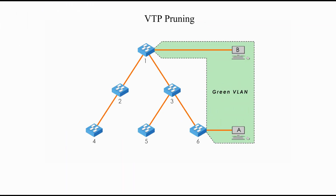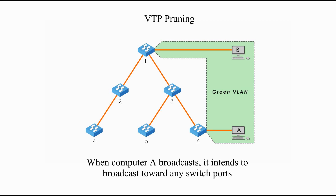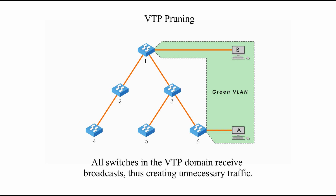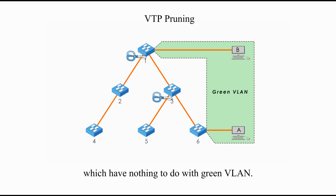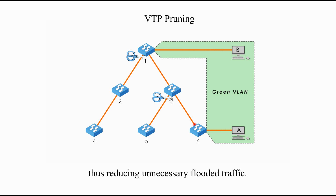The last concept is VTP pruning. Let's take a look at an example. Computer A and computer B are two hosts of the green VLAN. When computer A broadcasts, it intends to broadcast towards any switch ports assigned to the green VLAN, but the message will flood the whole network. All switches in the VTP domain receive broadcasts, thus creating unnecessary traffic. With VTP pruning, we can virtually prune all links towards those switches which have nothing to do with the green VLAN. When computer A broadcasts again, only related switches get the message, thus reducing unnecessary flooded traffic.